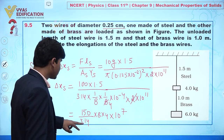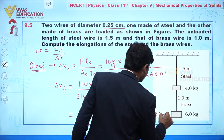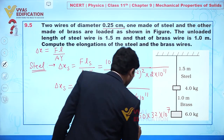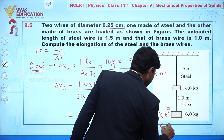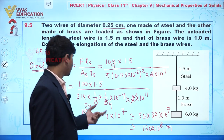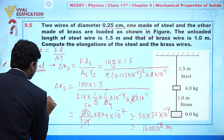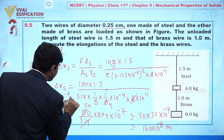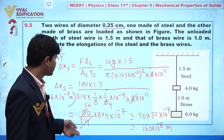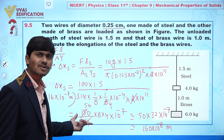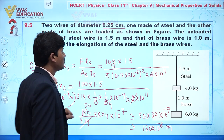Taking pi approximately equal to 3, we get approximately 50 times 32 times 10 to the power 7, which gives 160 times 10 to the power minus 8 meters. Accounting for the negative powers, the elongation in the steel wire is approximately 1.6 times 10 to the power minus 7 meters, or 160 times 10 to the power minus 8 meters. The actual value will be slightly less since we approximated pi as 3 instead of 3.14.